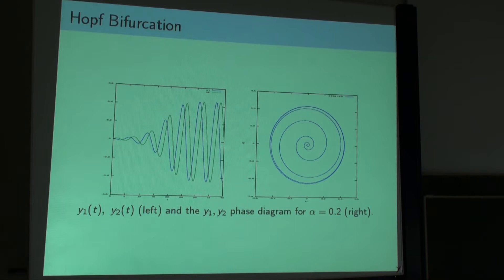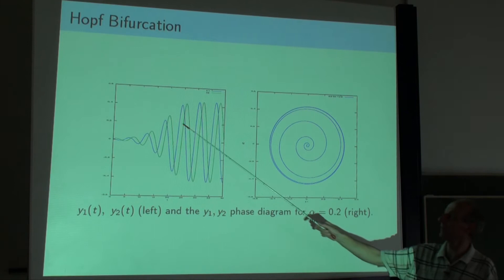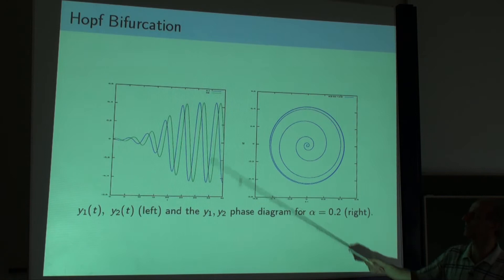If you start with exactly 0, then there is a constant solution 0. But if you start with small non-zero values, then for alpha equal to 0.2 you get this behavior: in the beginning it looks like exponential growth, but then it is limited - it goes up to a certain limit and that's it.